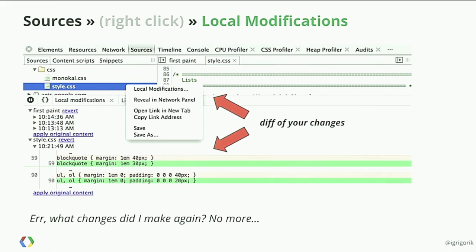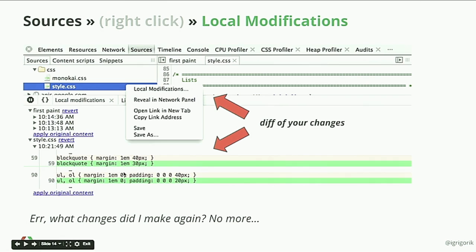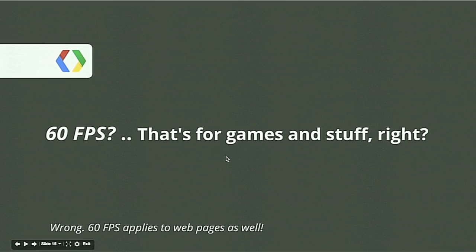Once you're editing in the Sources panel trying to improve first paint — maybe modifying CSS or markup structure — you'll eventually ask: what did I change? If you right-click any file in Sources and click Local Modifications, you get a full diff of every change you've made within those files. I wasn't aware of this until fairly recently, and it's quite nice.